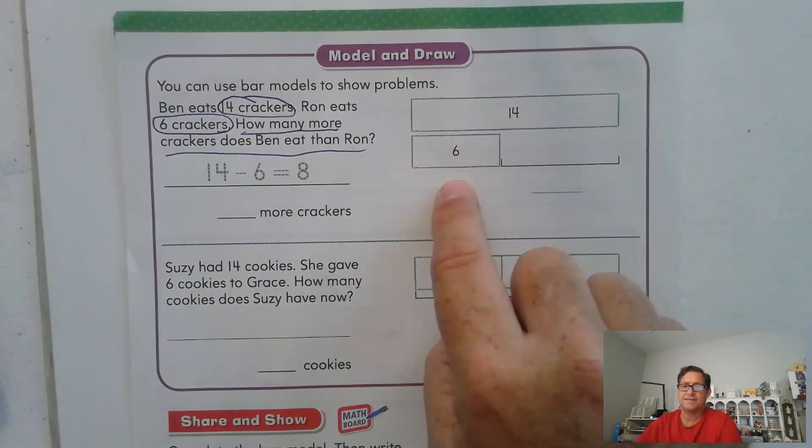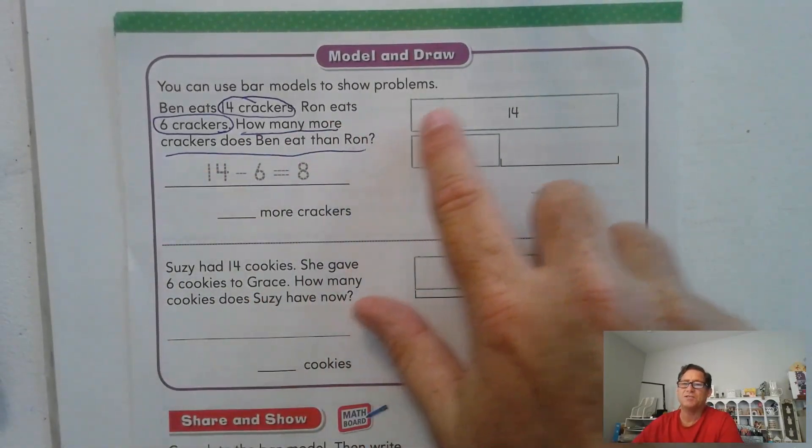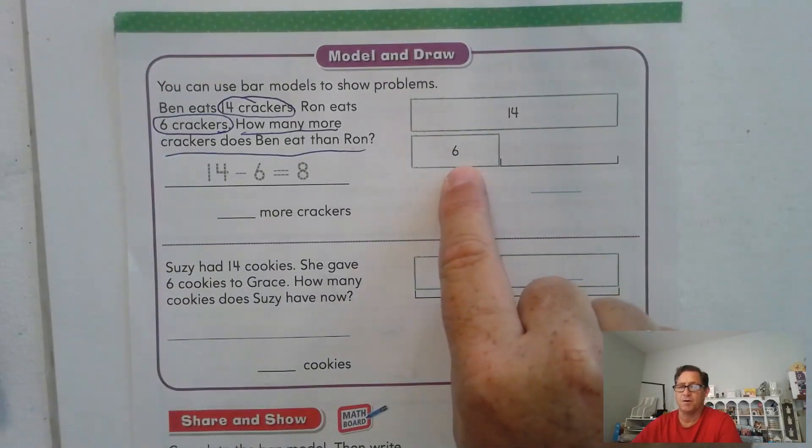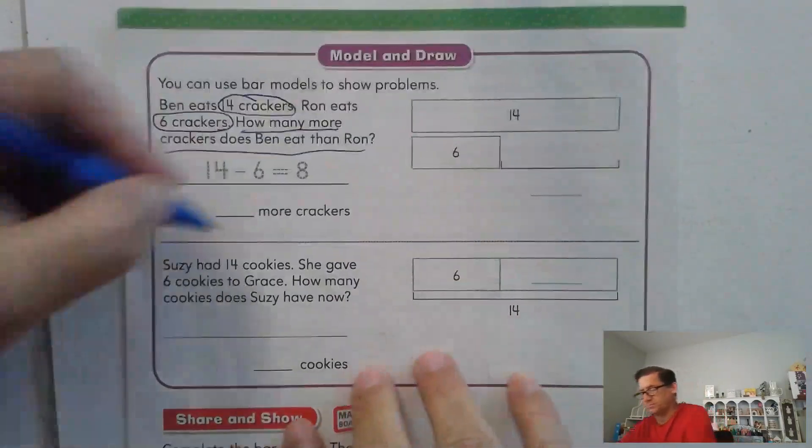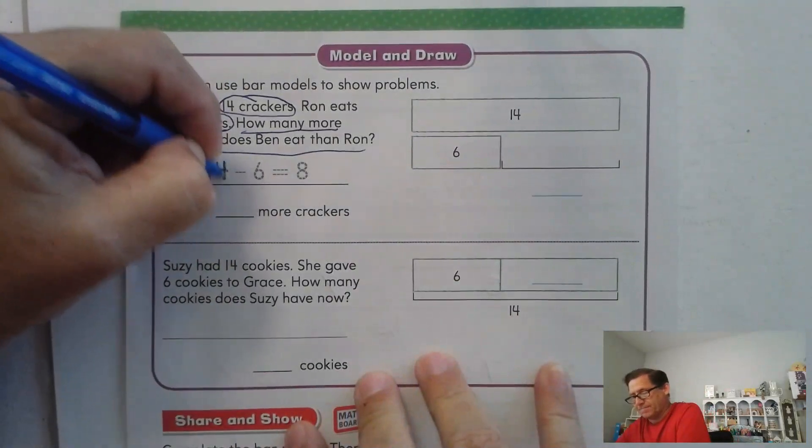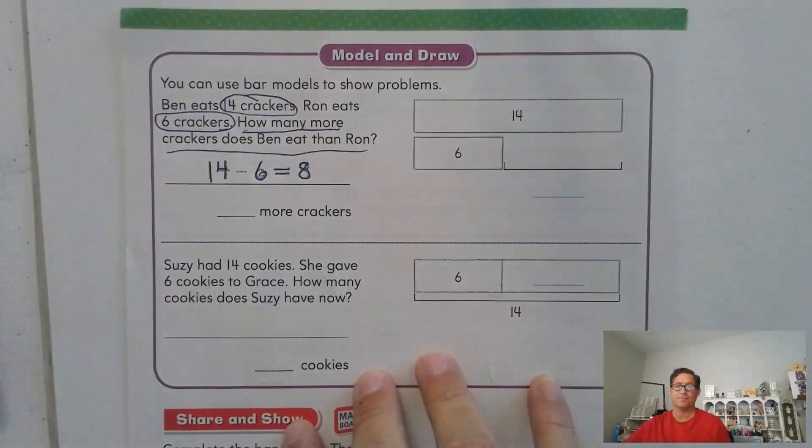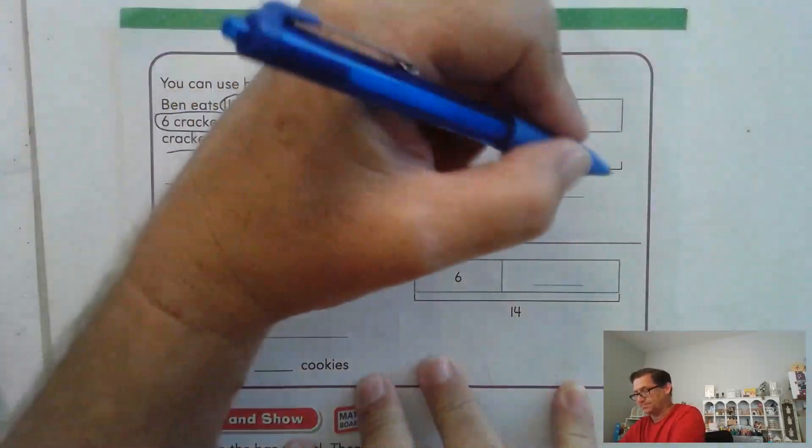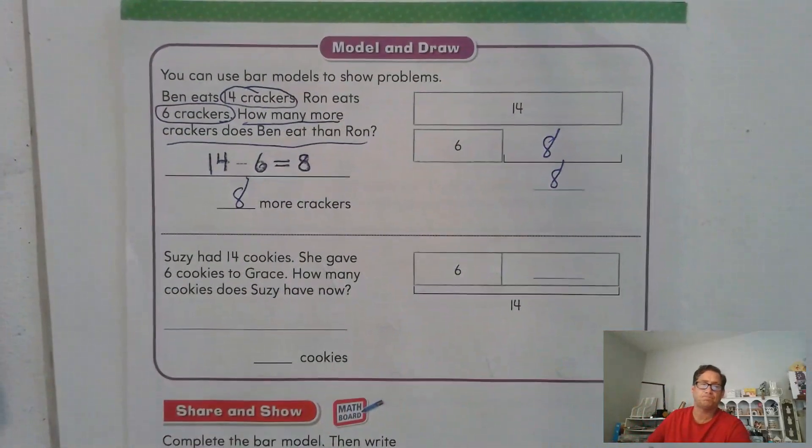So why are they on opposite bars? Well, because it says how many more crackers. In other words, how much longer is Ben's bar than Ron's bar? So we want to find out this missing space right here. So how do we do that? Well, we're going to subtract 14 minus 6 equals 8.